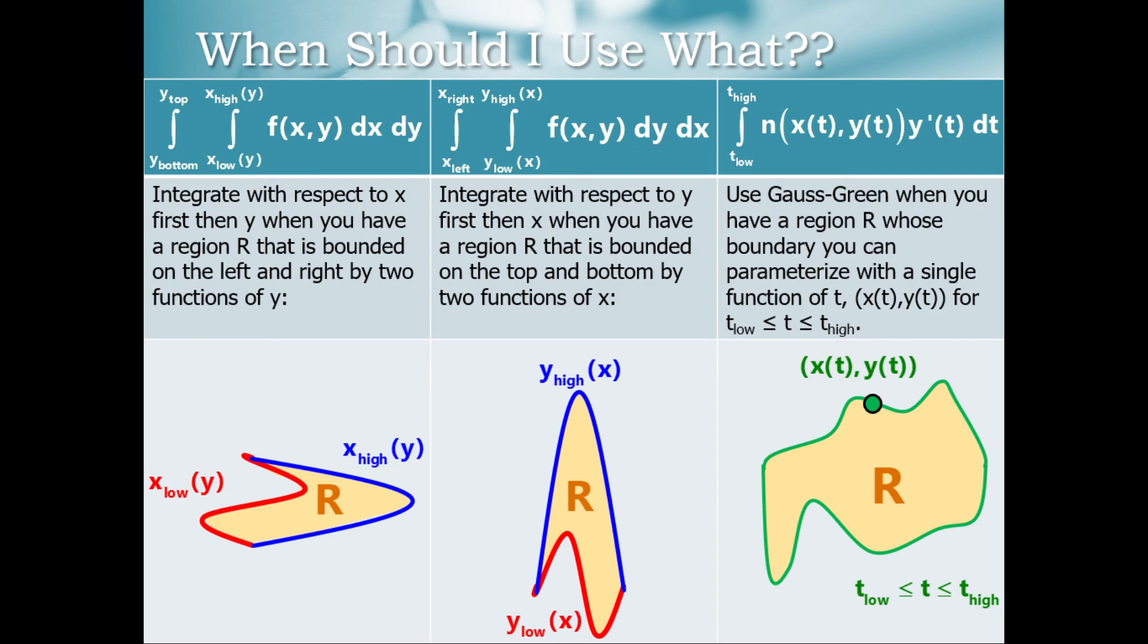Now, when should you use which technique? So Gauss-Green, what I just showed you guys, is really good for regions that can be parametrized that has an x(t), y(t). Double integrals over a non-rectangular region. The technique from my previous video, you have to pick between a dy dx integral and a dx dy integral in those cases. If you have a left bounding curve and a right bounding curve, you would want a dx dy integral. If you have an easily defined top bounding curve and bottom bounding curve, you would want a dy dx integral. And then again, like I said, if you are able to parameterize the boundary of your region on the xy plane, then you would try the Gauss-Green theorem.